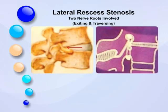Usually in this pathology, two nerve roots are involved. The exiting nerve root is compressed by upward migration of the superior facet, and the traversing nerve root is compressed by coronal orientation of the inferior facet.